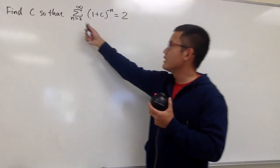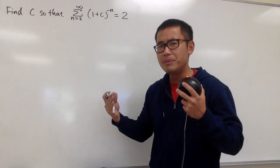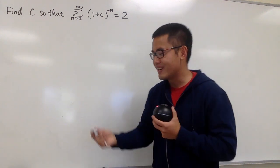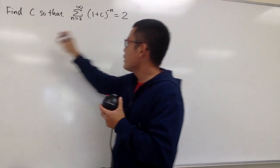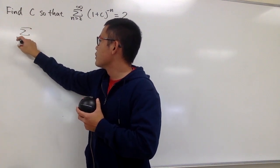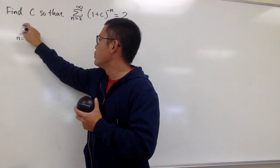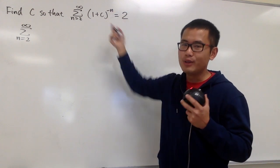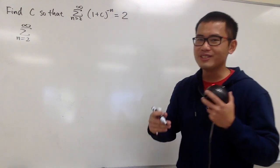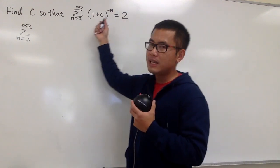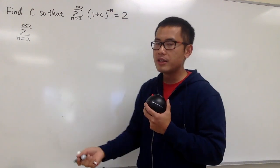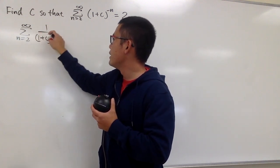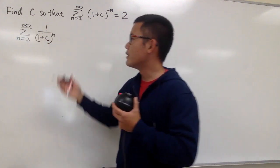Let's just focus on this to see what kind of series this is. Maybe once we write down a few things we know it much better. So this is the series when n goes from 2 to infinity. First of all, I notice that we have a negative exponent. We can put this down into the denominator as 1 over (1 plus c) raised to the n power.